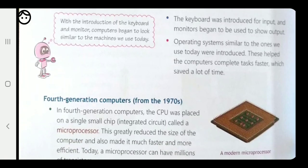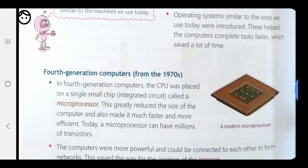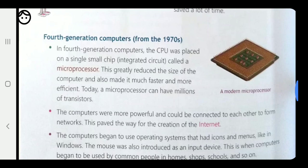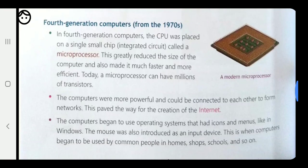Third generation computers were smaller in size, used less electricity, and heated up less. Now coming to fourth generation computers, which began from the 1970s. In the fourth generation, the CPU was placed on a single small integrated circuit chip called a microprocessor — a much smaller chip compared to previous circuits. This greatly reduced the size of the computer and also made it much faster and more efficient.